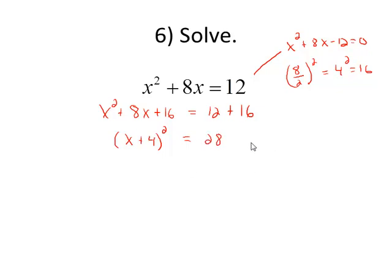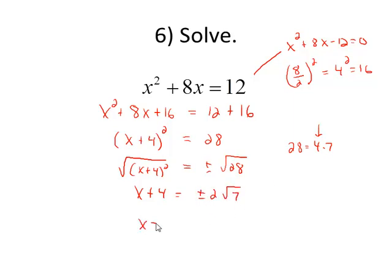And now we can solve by extracting square roots. The square root of the left side equals plus or minus the square root of the side containing the constant. The left side simply becomes x plus 4. The square root of 28: 28 is the same as 4 times 7, and I know the square root of 4 is 2. So I have plus or minus 2 root 7. And I finish by subtracting the 4 from both sides. So our solution set is negative 4 minus 2 root 7, negative 4 plus 2 root 7.